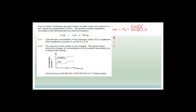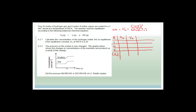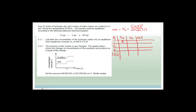So if we do a RICE table — R, I, C, E — and then concentration at equilibrium. We have H2, I2, and 2HI. It tells us that we started with five moles of hydrogen gas and five moles of iodine gas, sealed in a two decimeter cube container. So we know that's divided by two for each. And they want us to work out the concentration at equilibrium.